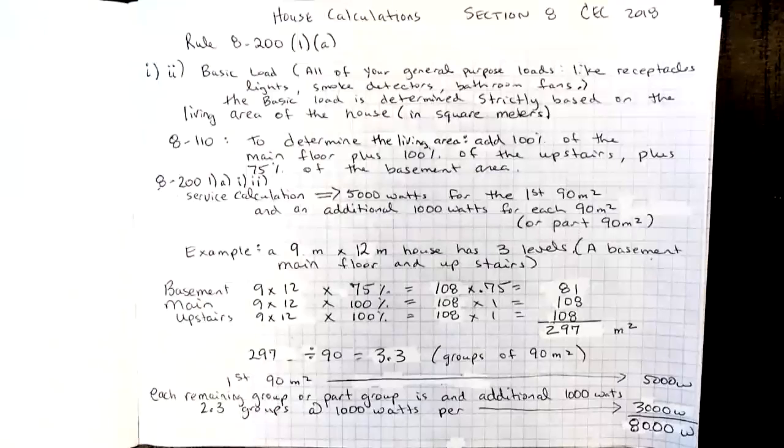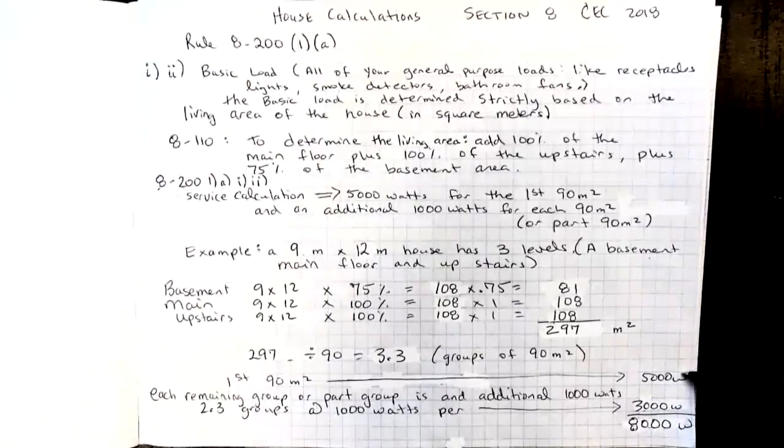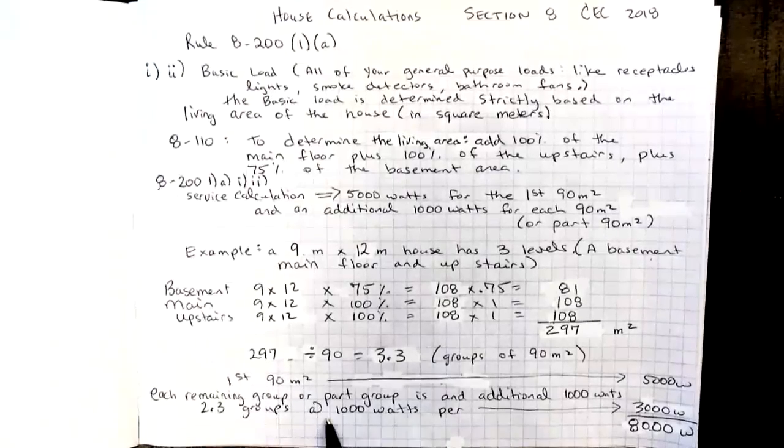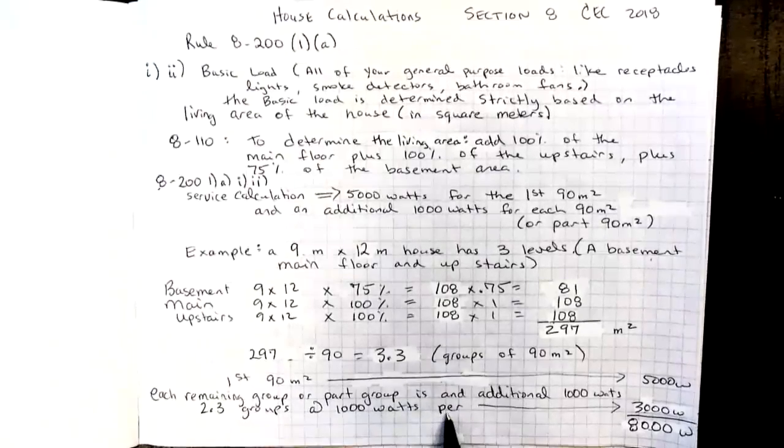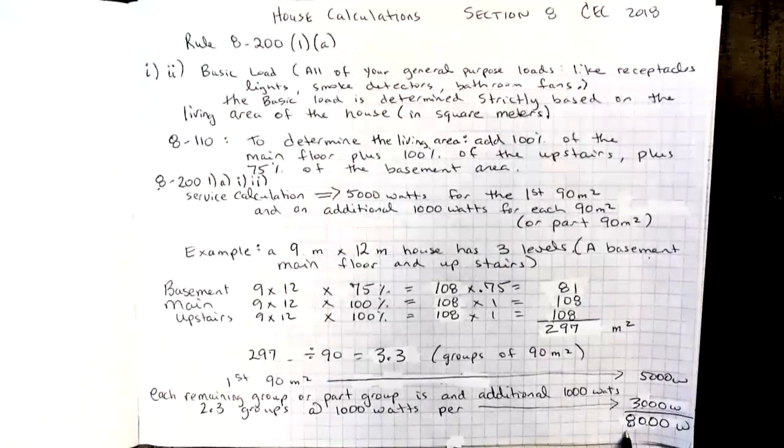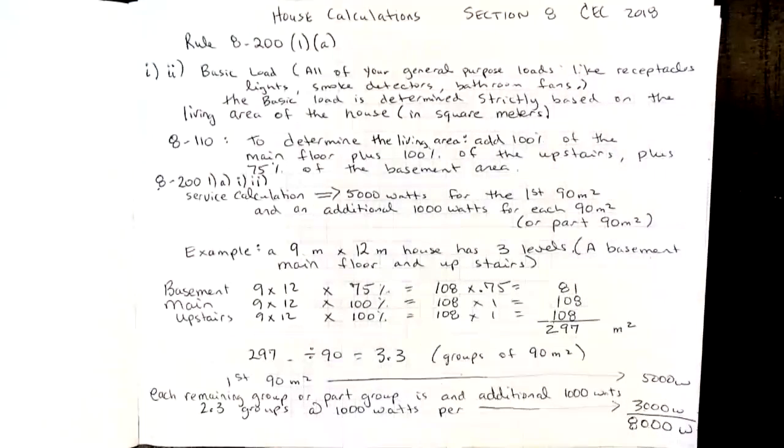To apply the demand factors from 8-200-1A, item one and two, what I would do is then divide 297 by 90. That gives me the groups of 90 meters squared. The first group of 90 meters squared, I'm going to apply 5,000 watts. That leaves me with 2.3 groups left over, and I apply an additional 1,000 watts per group. So that's going to be an additional 3,000 watts. So all together, based on the living area of this home, my basic load is going to calculate out to 8,000 watts.